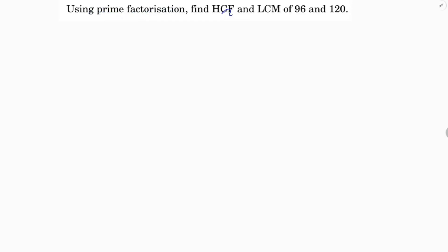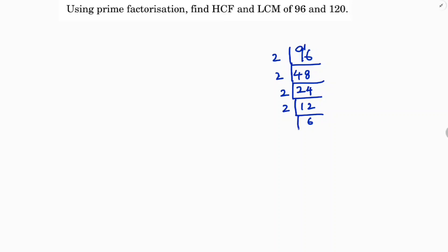Using prime factorization, find HCF and LCM of 96 and 120. For 96, the prime factors are: 2 times 48, 2 times 24, 2 times 12, 2 times 6, and 2 times 3. So 96 is 2 power 5 into 3.